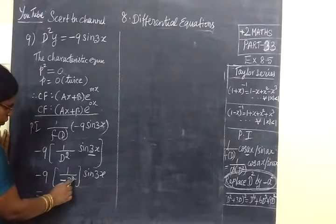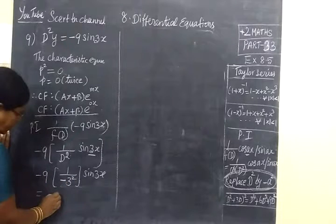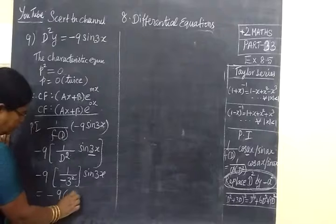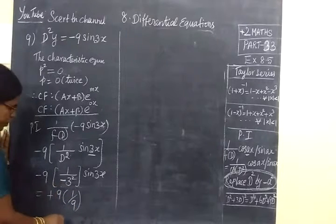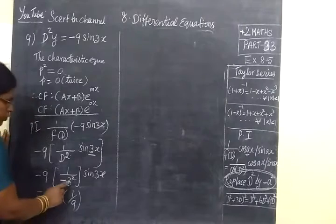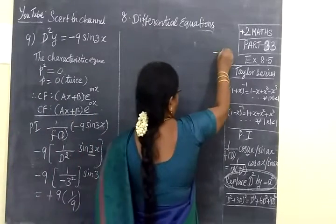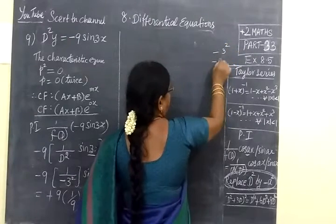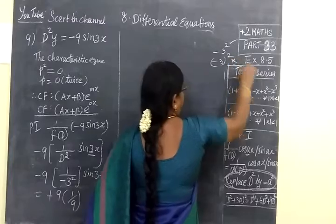So 3² gives 9. Minus times minus gives plus. So -9, then 1 by 9 becomes positive. You may think this is (-3) whole squared - this one will be correct.